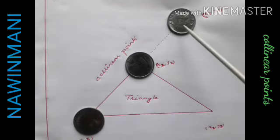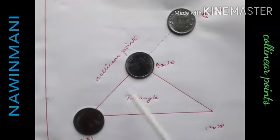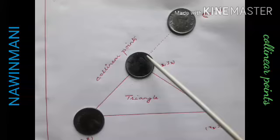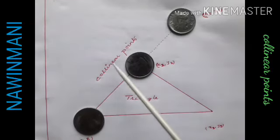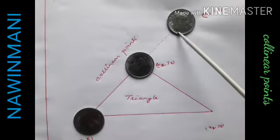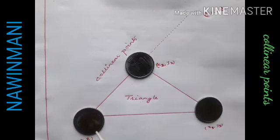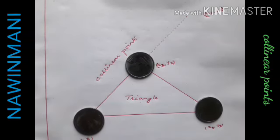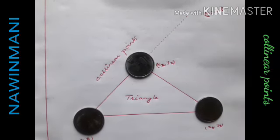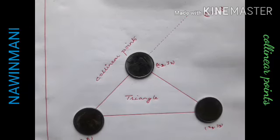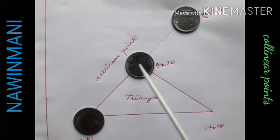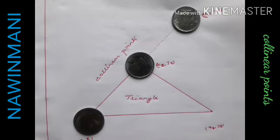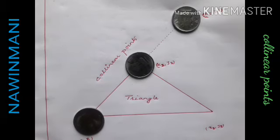So when you calculate the triangle area for these three points, if you get zero, then those three points will be collinear. They won't form a triangle.